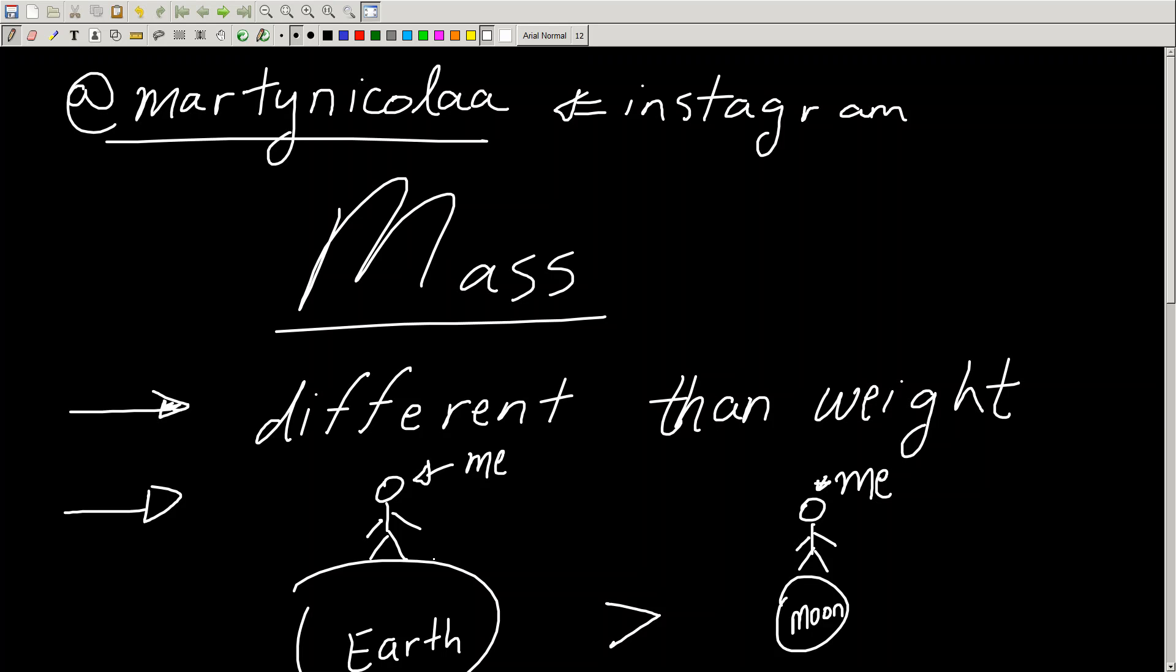So mass is something that doesn't change. Your mass won't change. The mass of the earth doesn't change. I think it's what, 5.98 times 10 to the 24 kilograms. That doesn't change. But my weight would change depending on what planet or what object I'm referring to. So if I'm on the earth, my weight will be more than on the moon, but my weight would be more on Jupiter than it would be on the earth or on the moon.